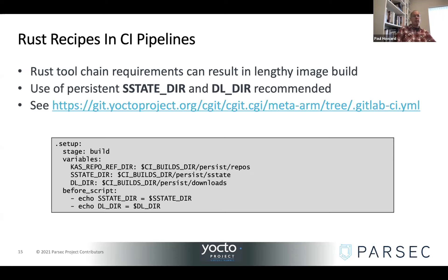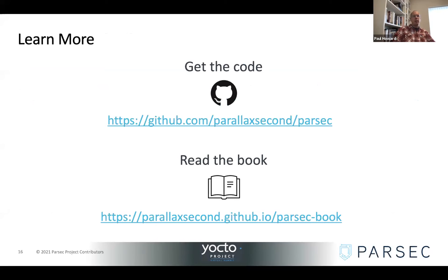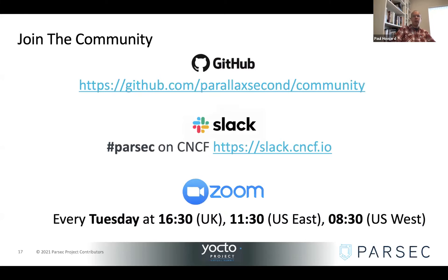That brings me to the end. I've talked about why Parsec exists, what it does, how you can make use of it in Yocto images, and a few details about our experiences with integrating a Rust-based project into Yocto. If this presentation has intrigued you about Parsec, here are some useful links for learning more. It's all open source — the code is available right there on GitHub. There's also an online book with quite a wealth of documentation about the project, along with API specs, published threat models, and lots of details about how things work internally.